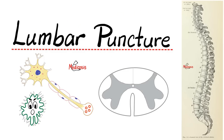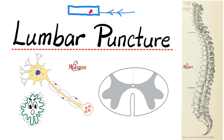Let me puncture your lumbar. Why? When I stick my needle into the subarachnoid space, I can do two things: I can withdraw the cerebrospinal fluid from your subarachnoid space to analyze that fluid — maybe because I suspect meningitis, encephalitis, etc. — or I can use the same technique to inject a local anesthetic agent, which could be spinal anesthesia or epidural anesthesia.